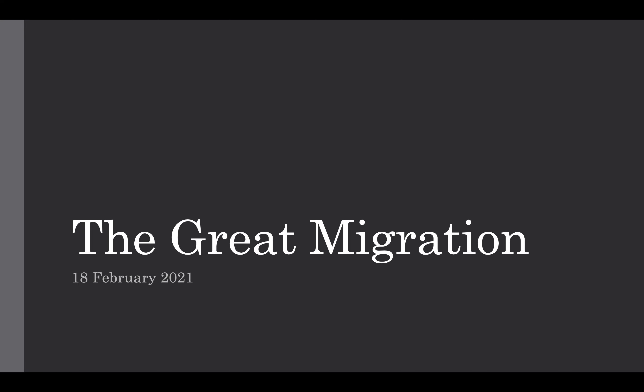Hello, everybody. Today we begin our reading of Ralph Ellison's Invisible Man, which is a novel that both depicts and is itself a product of the internal migration of African Americans from rural communities in the American South to big cities in the North. This is an event known in American history as the Great Migration.